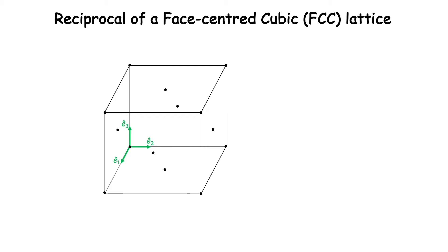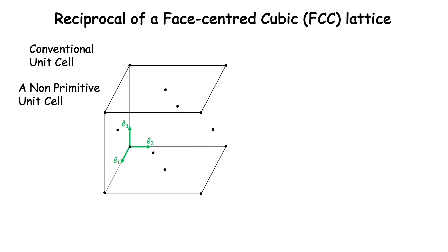Let us determine the reciprocal lattice associated with a face-centered cubic lattice. What is shown here is a conventional unit cell of an FCC lattice. It has lattice points at the eight corners as well as at the six face centers of the cell. Since it has lattice points at face centers as well, it is a non-primitive unit cell.